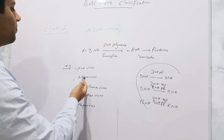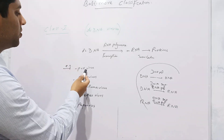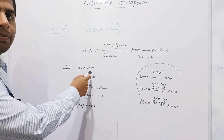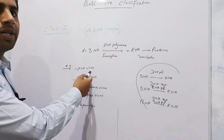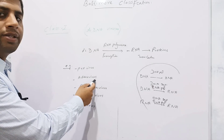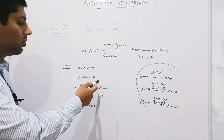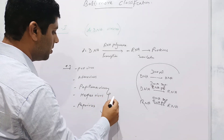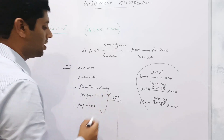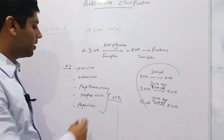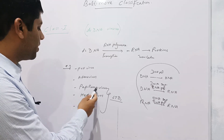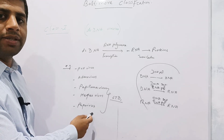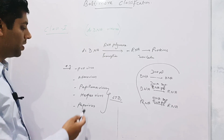Viruses in Class I have a genome of double-stranded DNA. Examples include pox virus, which causes smallpox and chickenpox in humans and also affects animals. Adenoviruses cause respiratory tract infections like the common cold. Papillomavirus and papovavirus are transmitted through the sexual route — these are sexually transmitted diseases causing genital warts, ovarian cancer, cervical cancer, vaginal cancer, and uterine cancer. Herpesvirus causes skin lesions as well as lesions on the genitalia of both males and females.